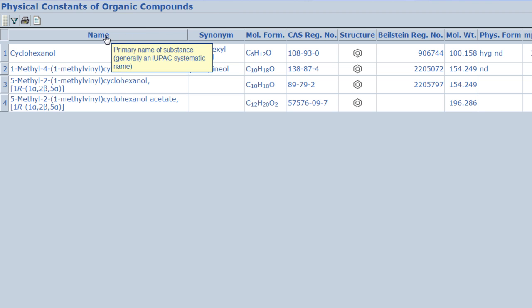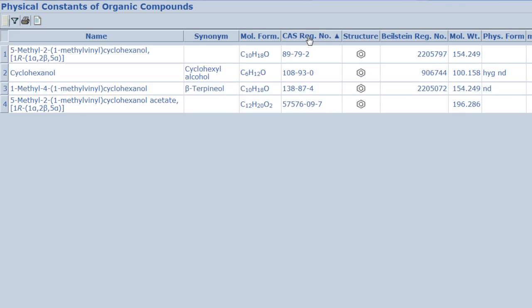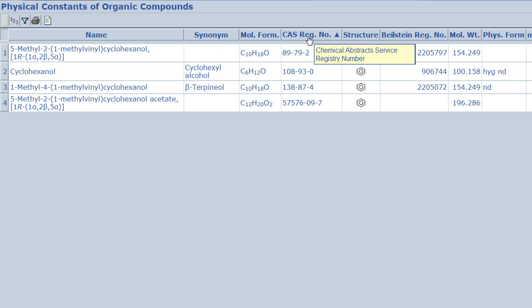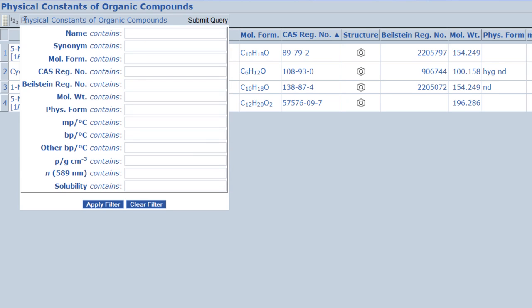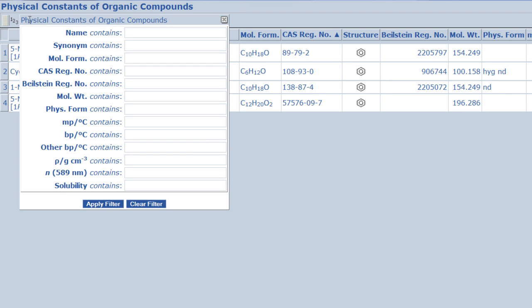Mouse over each column title on the chart to learn more about it. You can also sort the information according to a heading by clicking on it. In the top left corner, there are icons to filter, print, and export the table. If you click the filter icon, you will see a list of options that can be used to narrow your search further.